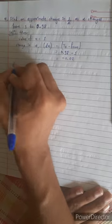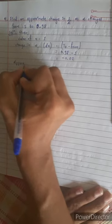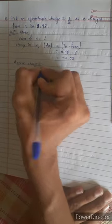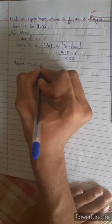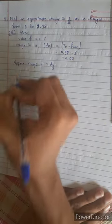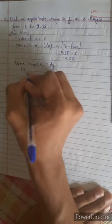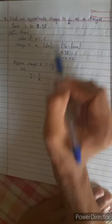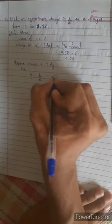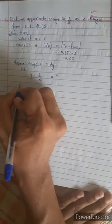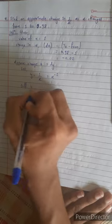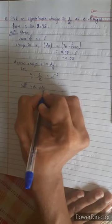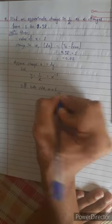We have approximate change equals dy. If y equals 1 by x, or y equals x to the power negative 1, we differentiate both sides with respect to x.